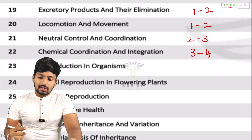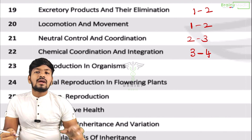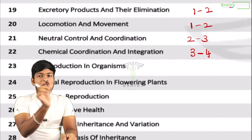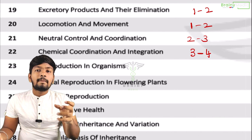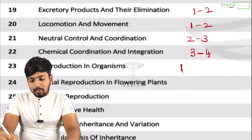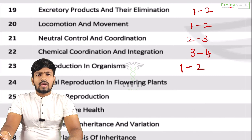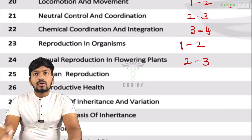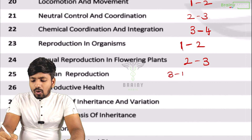Next is reproduction in organisms. In terms of exam season, questions start here. Reproduction in organisms: two questions chances. Sexual reproduction in flowering plants is an important lesson — two to three questions chances. Human reproduction is a very very important lesson — three to four questions chances.